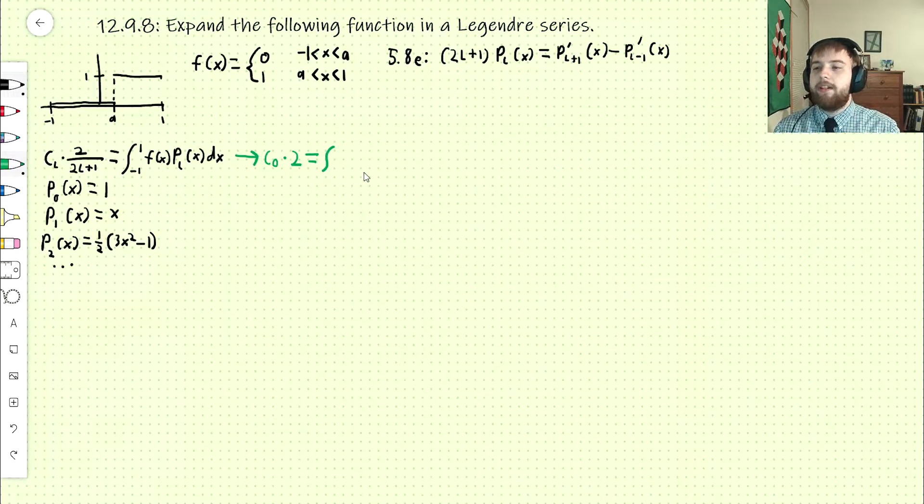And where does this integral take place? The inside of the integral is 0 below A, and above A it's just P_L(x). So we're going to go from A to 1 of P0(x). And if we look down here, I have the first couple Legendre polynomials written out. P0(x) is 1. So it's from A to 1 dx. So when we solve this, we get C0 equals (1 - A) / 2.